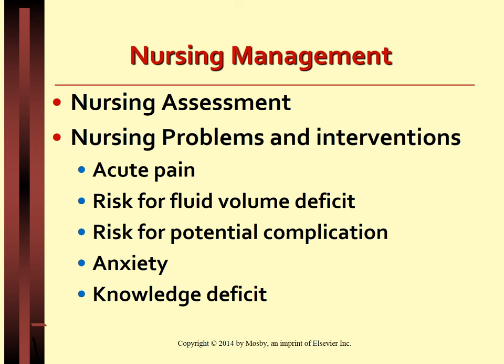Nursing diagnoses include: Acute pain related to inflammation of the peritoneum and abdominal distension. Fluid volume deficit related to fluid shifts into the peritoneal cavity secondary to trauma, infection, or ischemia. Anxiety related to uncertainty of cause or outcome of the condition and pain. Knowledge deficit related to cause of peritonitis, treatment, medications, and their side effects and follow-up.